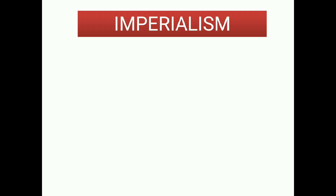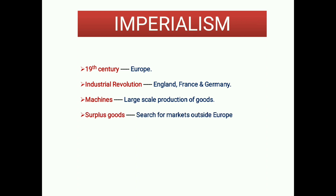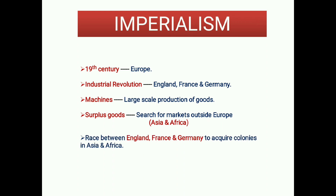Imperialism: In 19th century Europe, the Industrial Revolution began in England, then spread to France and Germany. Machines made large-scale production of goods possible. Surplus goods needed new markets outside Europe, leading to a race between England, France, and Germany to acquire colonies in Asia and Africa, which led to enmity and war in 1914.